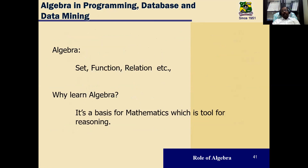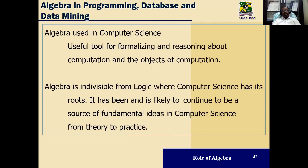How algebra is used in programming, databases, and data mining is another important area. Set theory, functions, and relations are foundational. Relational algebra is used in databases. Algebra is a basis for mathematics and a tool for reasoning. In computer science, it is useful for formalizing and reasoning about computation and objects of computation — linked to logic, where computer science has its roots.